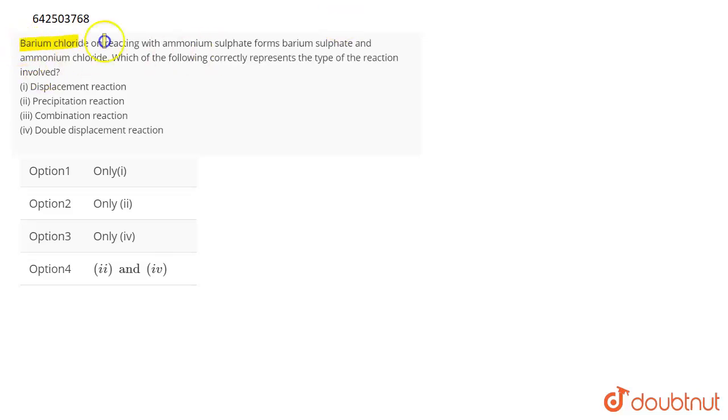The question is barium chloride on reacting with ammonium sulfate forms barium sulfate and ammonium chloride. Which of the following correctly represents the type of the reaction involved? You're given four statements and basically four types of reactions are given below. So you have to tell which is the correct statement about the given word equation.